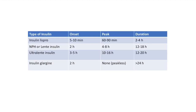Types of insulin: Insulin lispro has onset of action 5-10 minutes, peak 60-90 minutes and duration 2-4 hours. NPH or lente insulin has onset around 2 hours, peak 4-8 hours, and duration 12-18 hours. Ultra-lente insulin has onset 3-5 hours, peak 10-16 hours and duration 12-20 hours. Insulin glargine has onset around 2 hours and duration more than 24 hours.